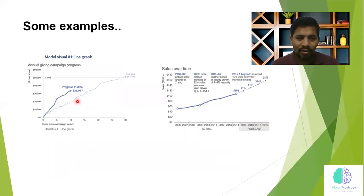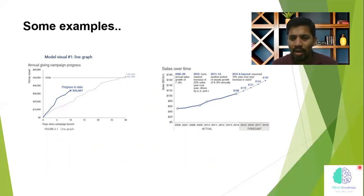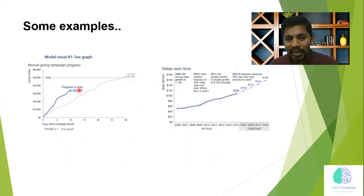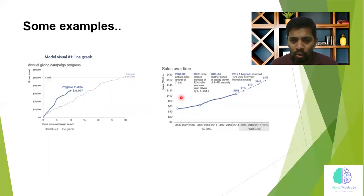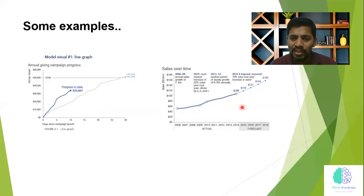One last example: let's say you have last year's prediction and your current position today. The author suggests graying out the last year's data — otherwise our mind tries to pick up that older information and we might miss the progress made. It is also very important to add small text annotations, such as showing a six to two, two to nine, or seven to eight percent improvement, indicating what is actual and what is forecast — all in one chart. It looks very nice.